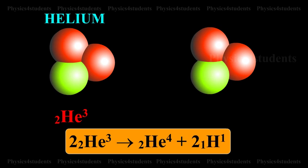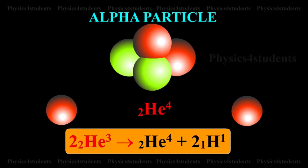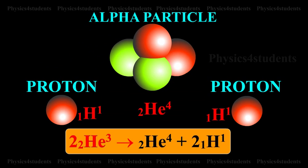This helium combines with another similar helium, producing an alpha particle, that is 2-HE4 and releasing two protons.